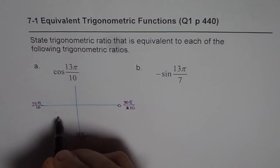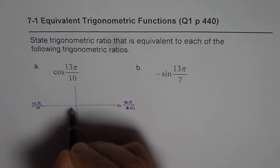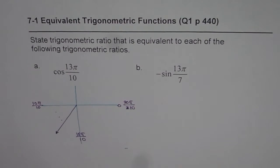So 13π by 10 is somewhere here. So it is 10, 11, 12, 13. Kind of like this you can check, right? 14, 15. So let's say 13π by 10 is kind of like this.